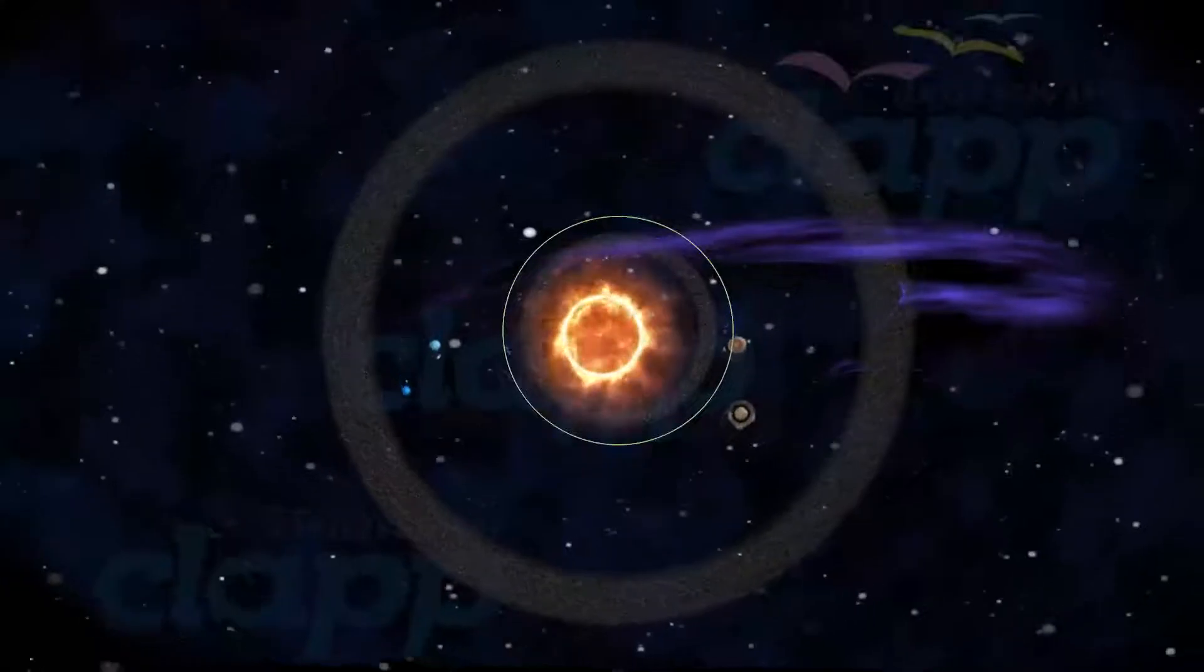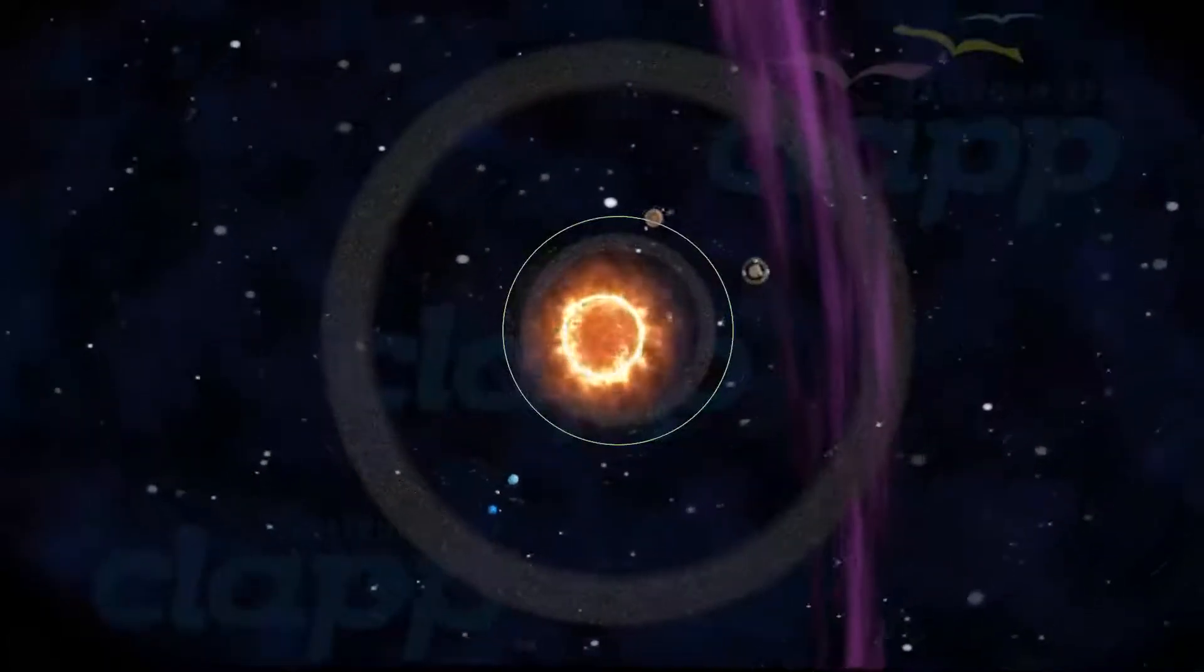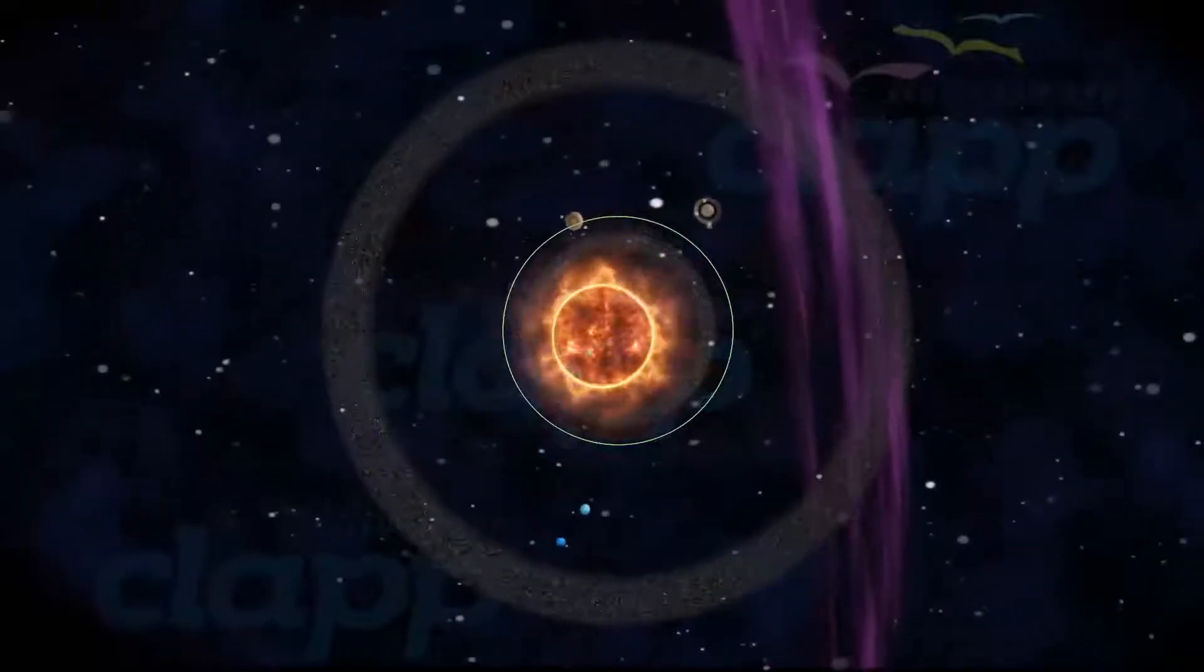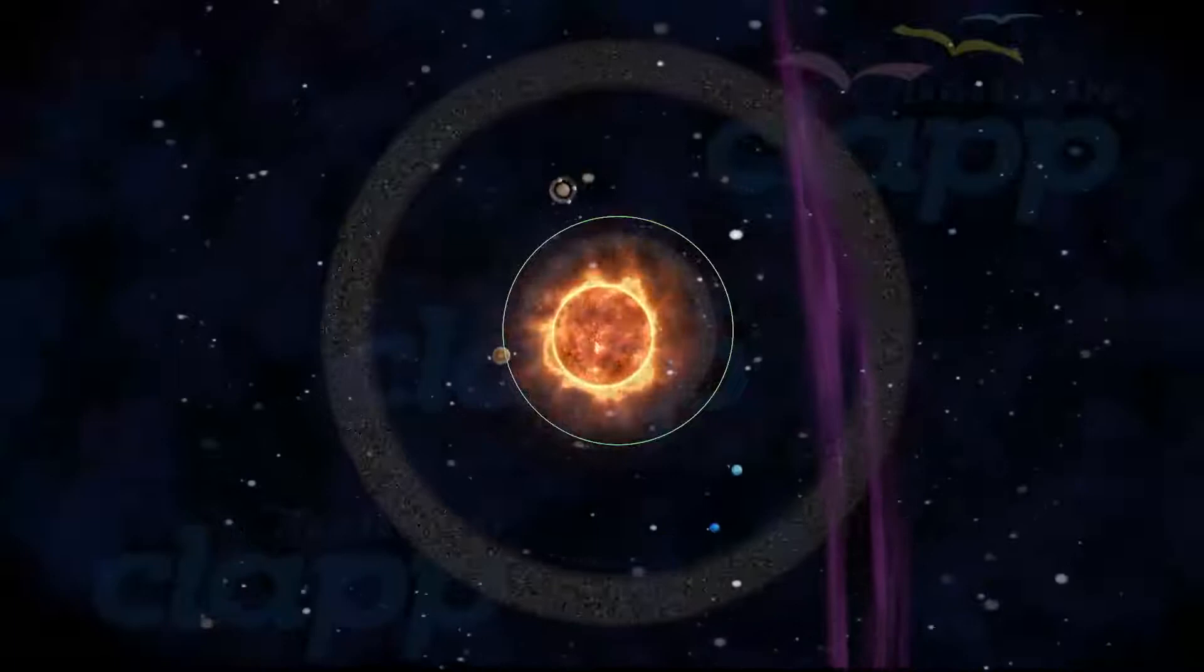Jupiter is orbiting around the Sun at an average speed of around 12.6 kilometers per second and it takes 12 years to complete an orbit around the Sun.